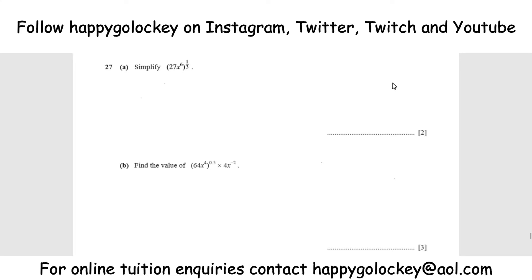The questions are as follows. Part A: simplify (27x⁶) to the power of a third. And Part B: find the value of (64x⁴) to the power of a half, multiplied by 4x to the power of minus 2. There are five marks available for just these two parts of question 27.